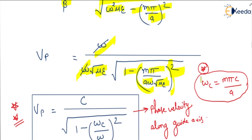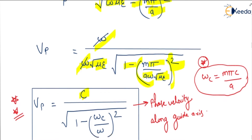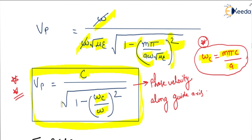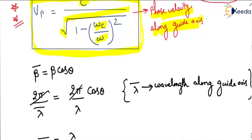The ω terms cancel, and 1/√(με) equals c. We substitute c and note that ωc, the cutoff frequency, is mπc/a. So mπc/a equals ωc, giving us (ωc/ω)². This leads to the important formula for phase velocity: vp equals c divided by the square root of 1 minus (ωc/ω)², or equivalently c divided by the square root of 1 minus (fc/f)². This is the phase velocity along the guide axis.